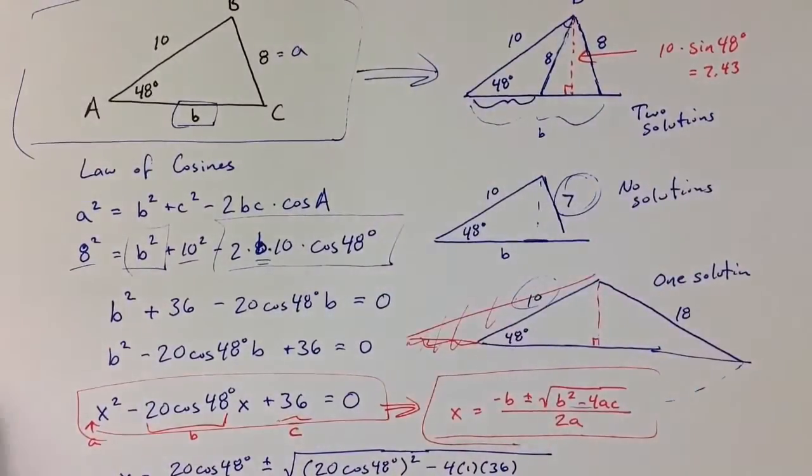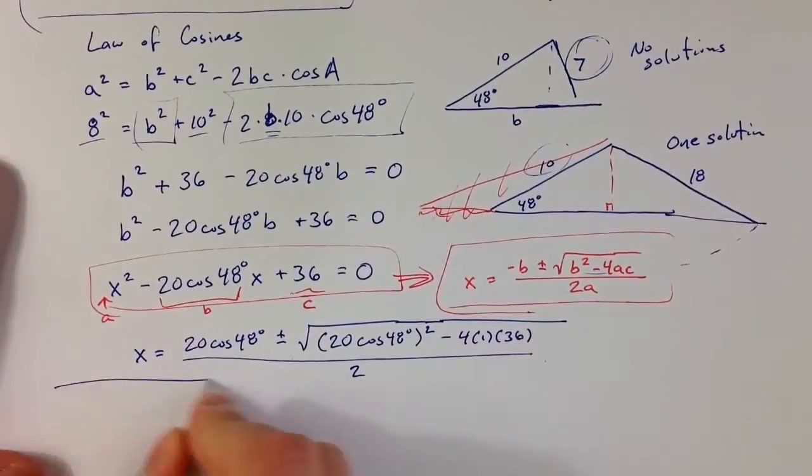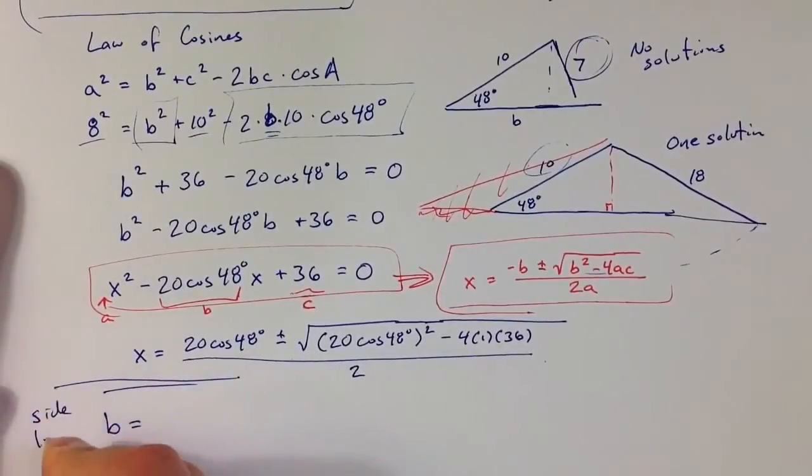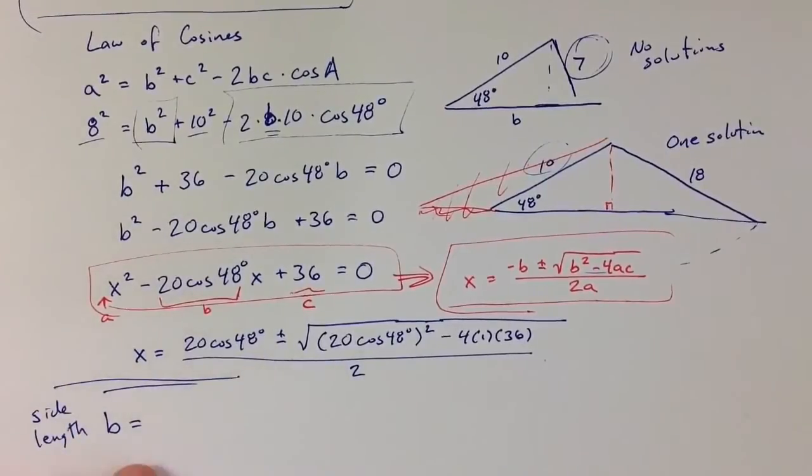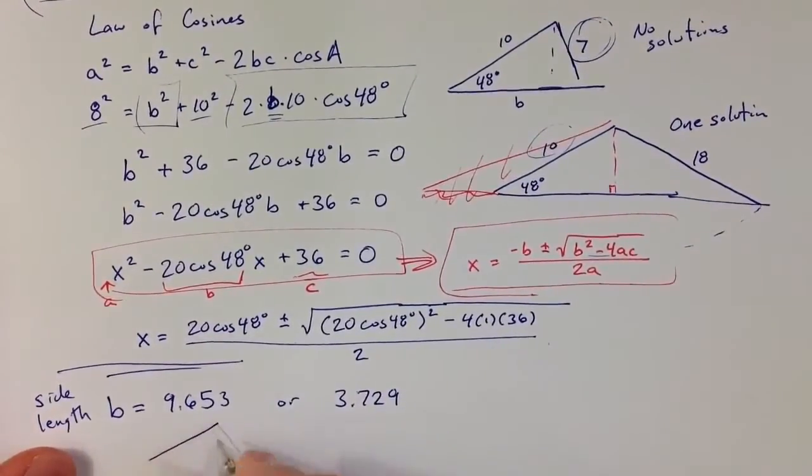Going back into the triangle notation, what we just found using the calculator is that b, the side length b—to distinguish it from the quadratic formula value for B—the side length b could either be 9.653 or 3.729. The larger value is going to give us a triangle that looks a little something like this, where we have side length 10 and 9.653 and a side length 8. The smaller value is going to give us an equally valid solution, where we have side length 10 and 8, and then 3.729.